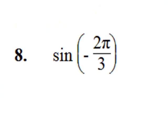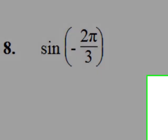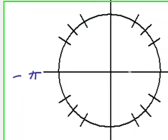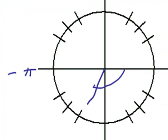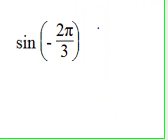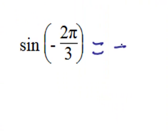Number eight. Sine of negative two pi over three. That's not quite a negative pi. It's only two-thirds in the negative direction. That'll be right here. And sine in quadrant three is negative. So I'll write a negative sign here.